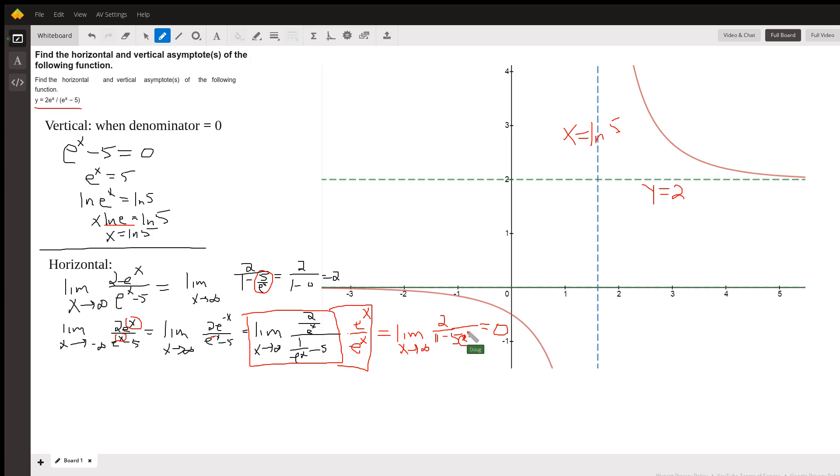this term right here approaches infinity—negative infinity, actually—and we get 2 over infinity, which is 0. And that's this horizontal asymptote right here, the line y = 0.